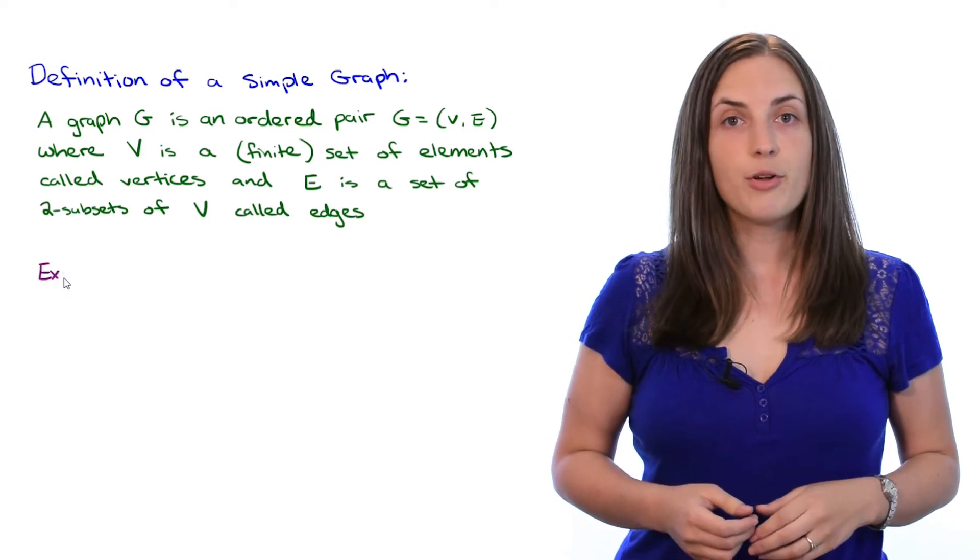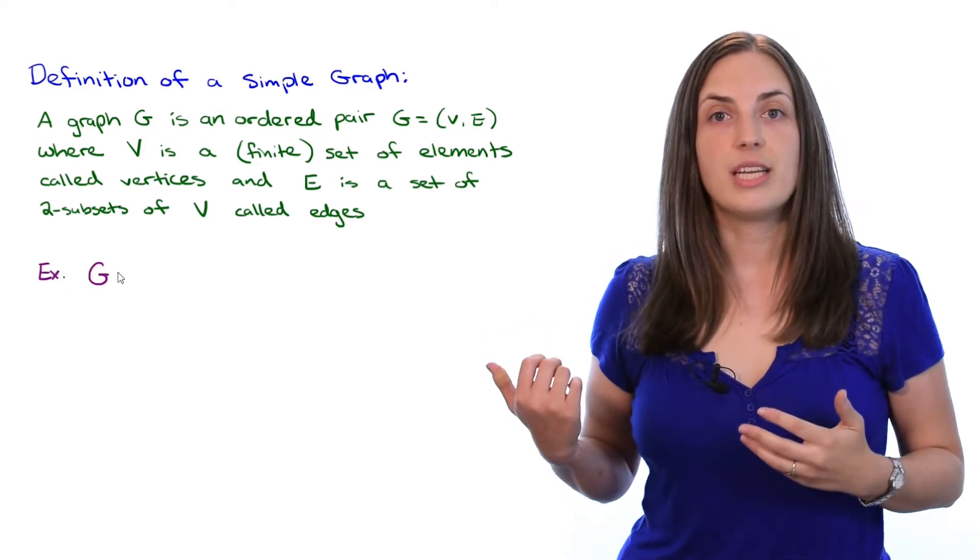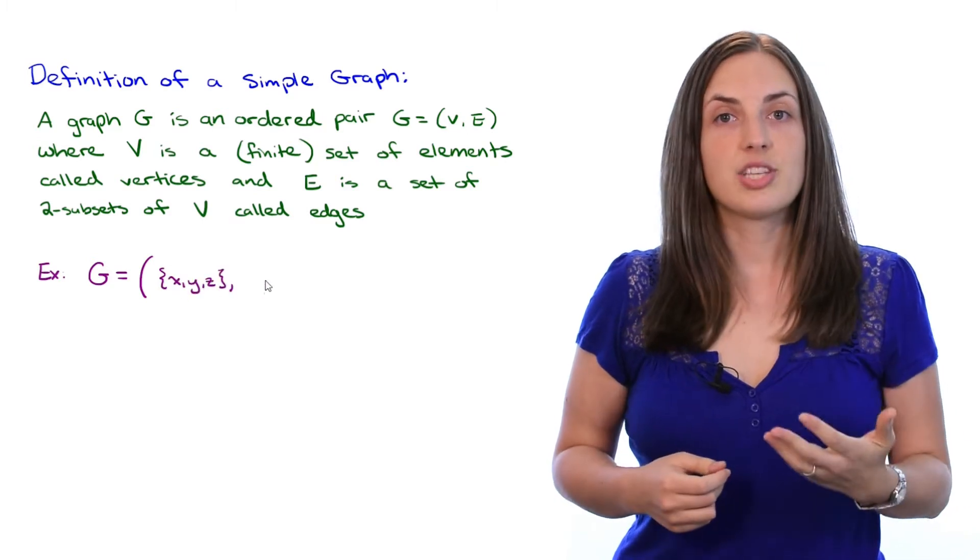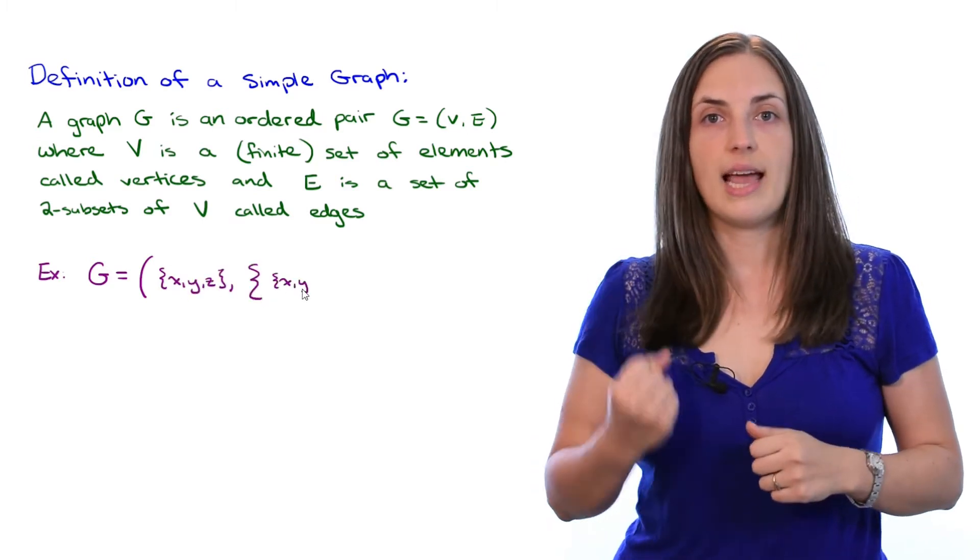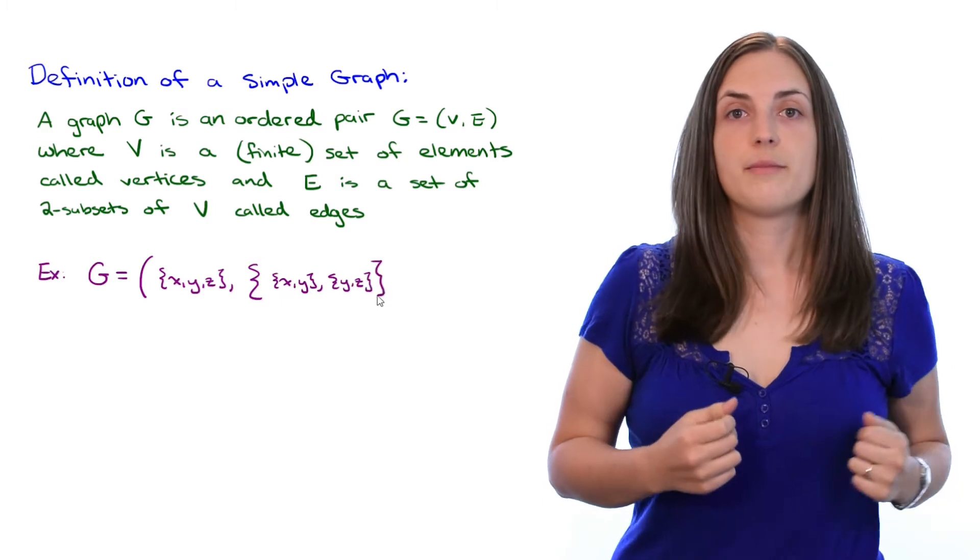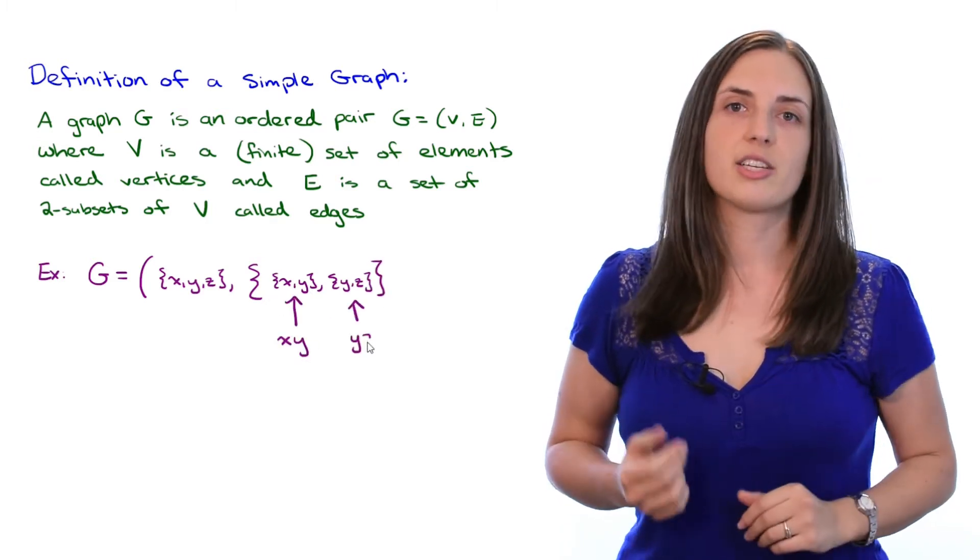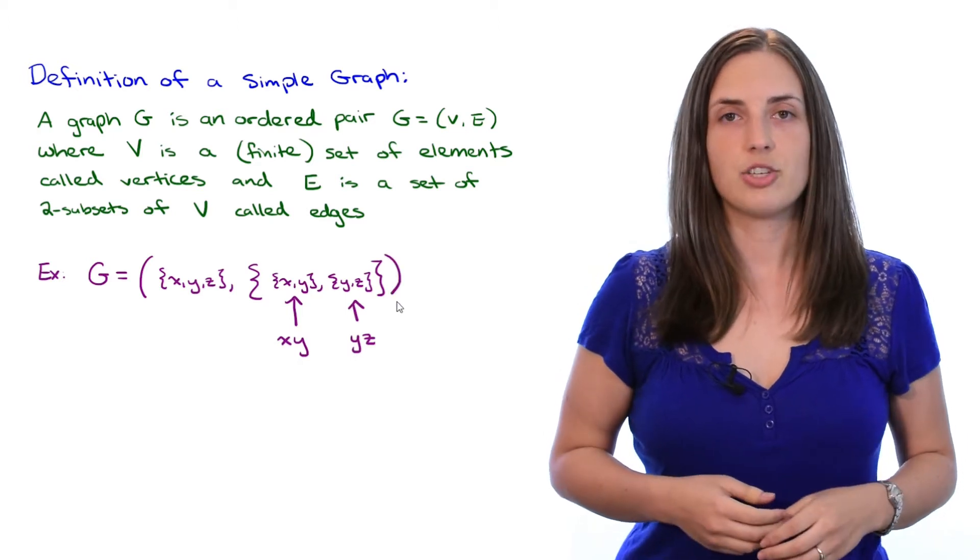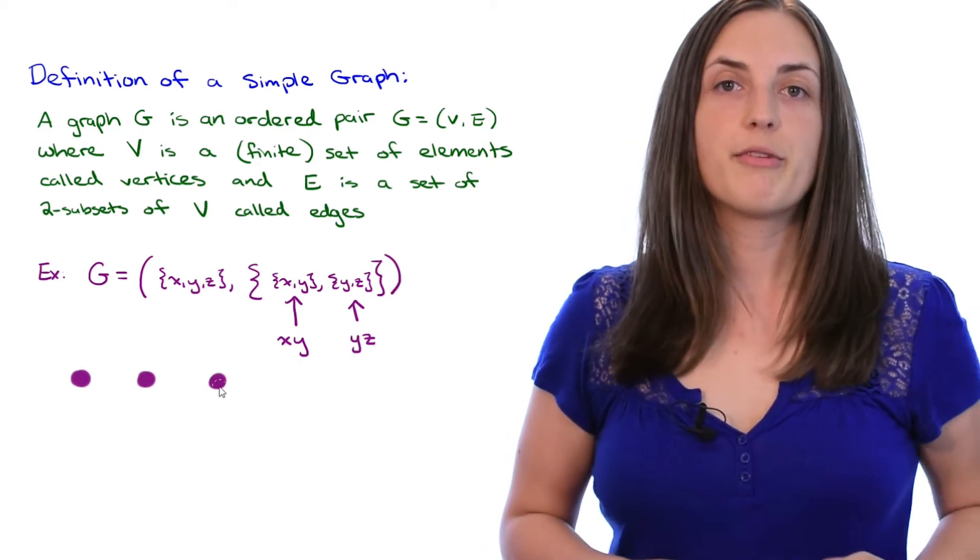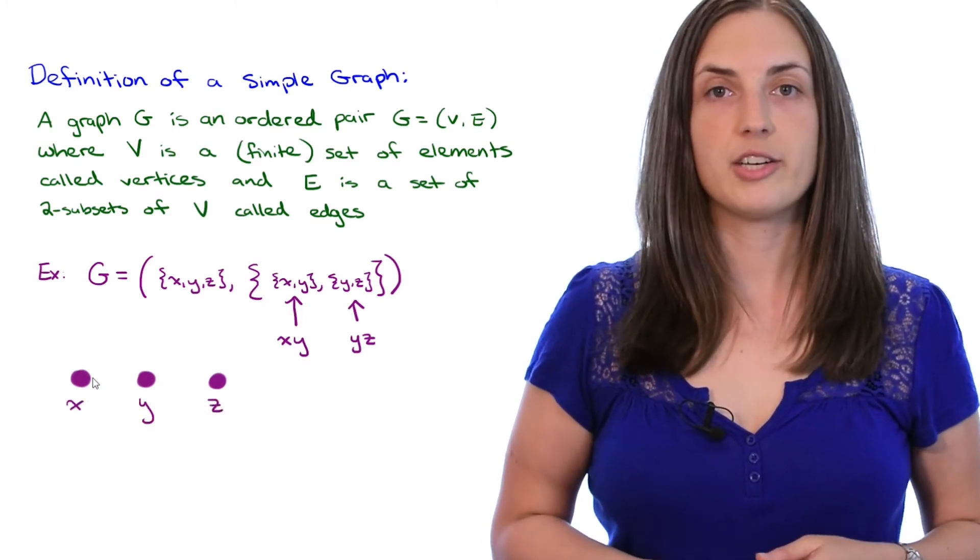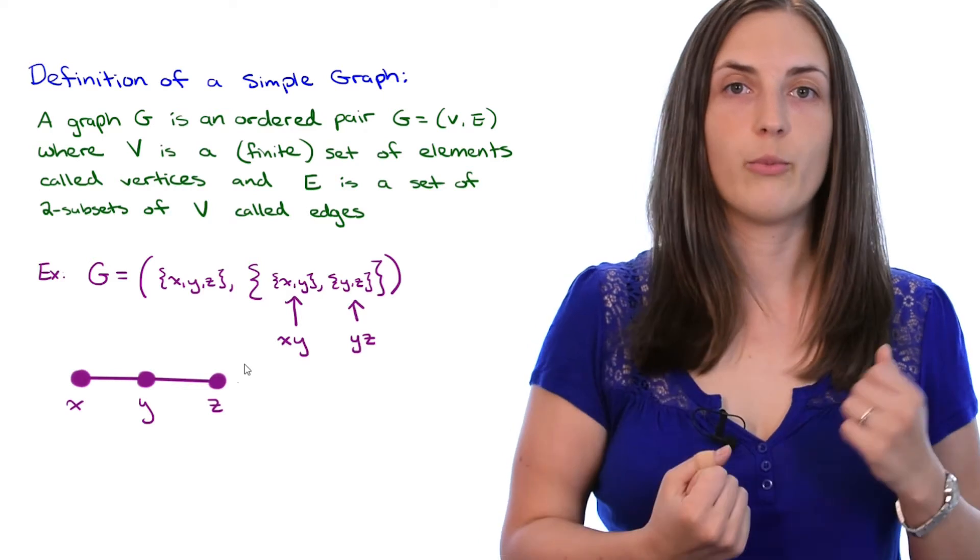To take a look at a really small example, let's say that we have the graph G which has vertex set X, Y, Z, and edge set given by two edges, say X, Y, and Y, Z. Now remember that we often use the shorthand just X, Y without the extra brackets to represent that same edge. Let's draw this graph. We'll put down three vertices and we'll label them X, Y, Z, and now it's really clear where to put the edges, one between X and Y, and one between Y and Z.